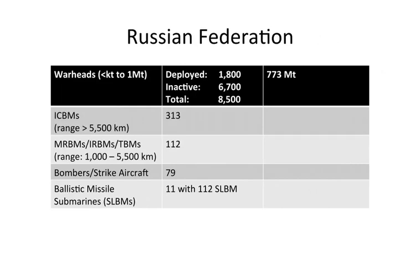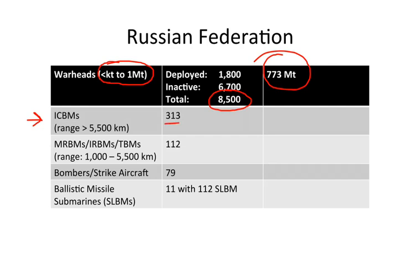Starting with the Russian Federation, you can see that Russia has warheads ranging from sub-kiloton to one megaton in yield, with 8,500 total warheads — a very large arsenal. The total destructive potential of the arsenal is an estimated 773 megatons. Russia has approximately 313 intercontinental ballistic missiles and a wide range of medium-range systems, although almost all of these — in fact, maybe all of them — are not really in a nuclear strike role at present, though they could be adapted to that role.